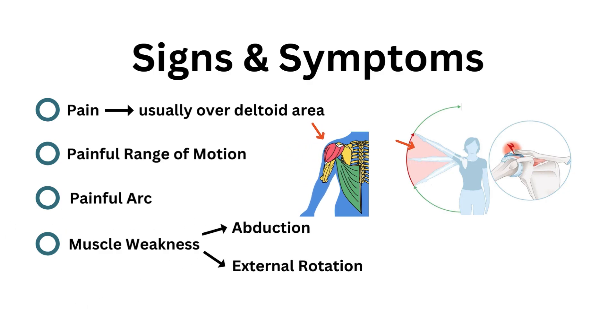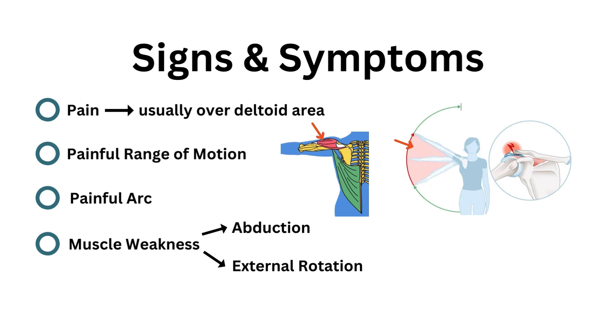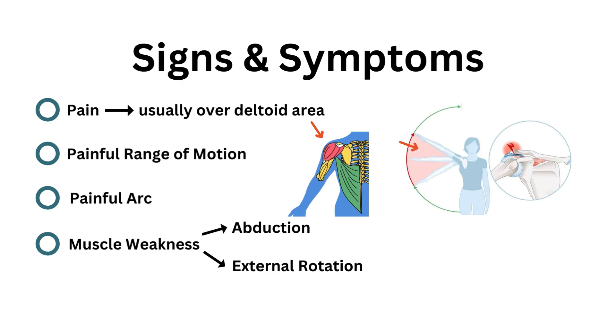These signs result mainly from a loss of superior stability of the glenohumeral joint due to dysfunction of the rotator cuff muscles.